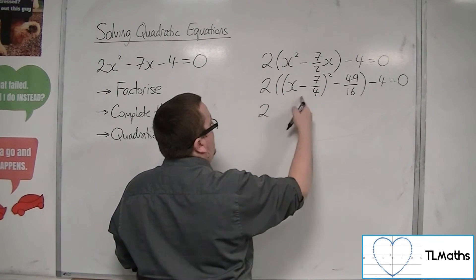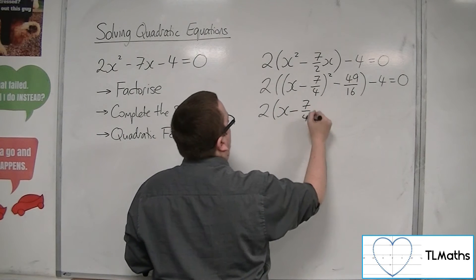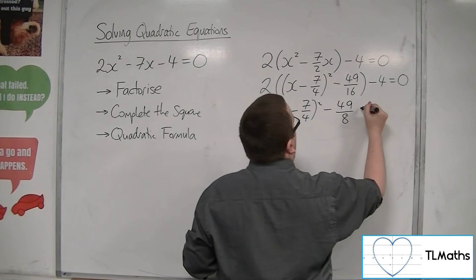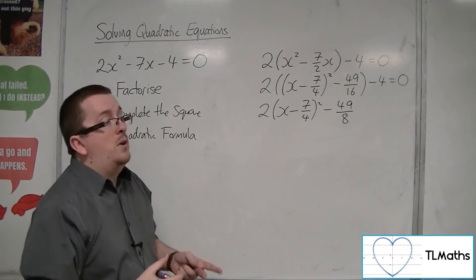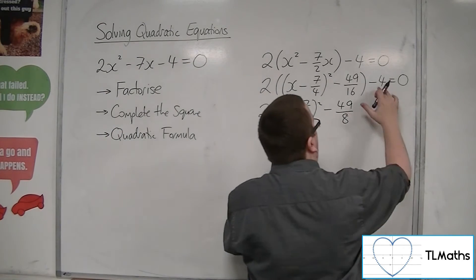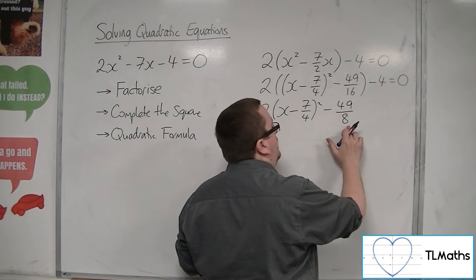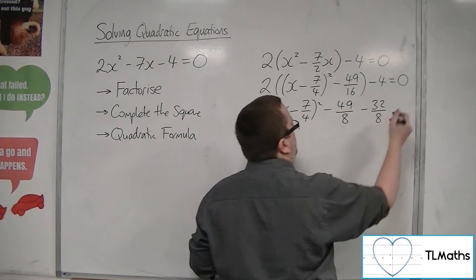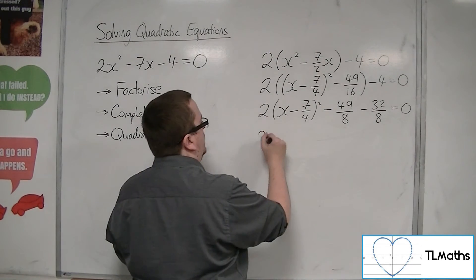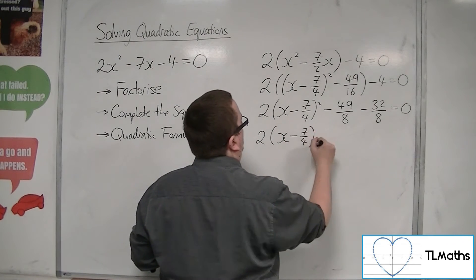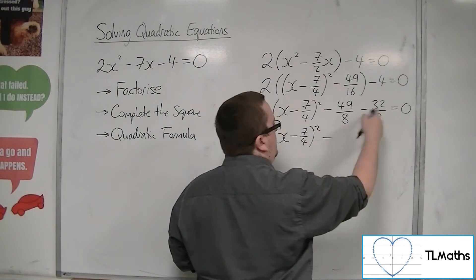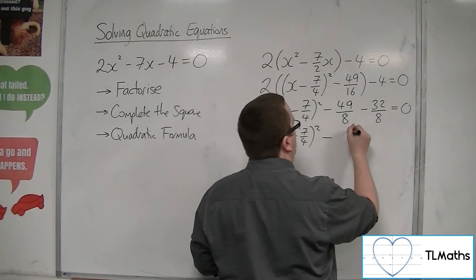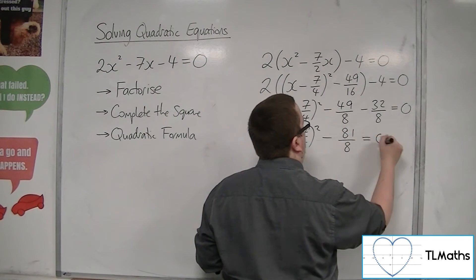Then we multiply that 2 through to hit the bracket. And then we've got 2 lots of the minus 49 over 16, so minus 49 over 8. And then we've got this minus 4, so I might as well write that as a fraction with the same denominator here. So we're going to have 32 over 8, that's 4 equals 0. So 2 lots of x minus 7 quarters squared, combining these, minus 49 over 8 minus 32 over 8 is minus 81 over 8 equals 0.